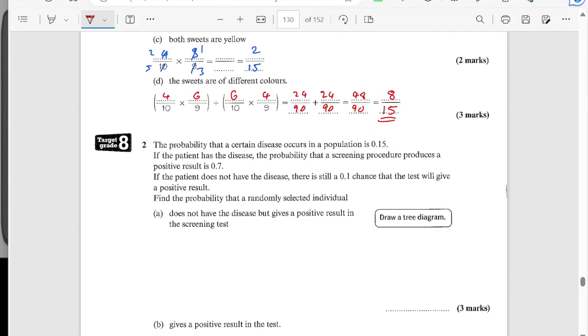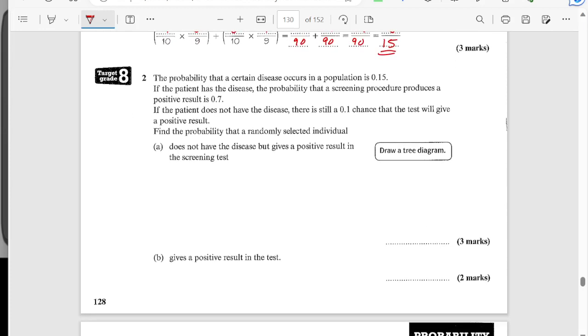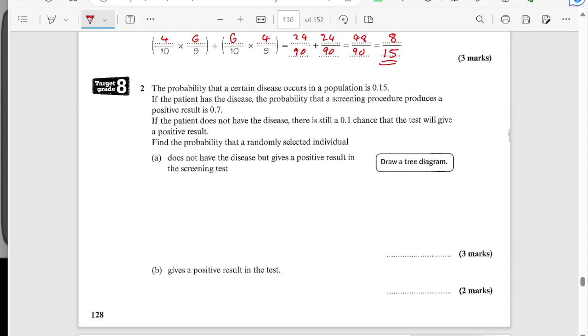Okay, question two. The probability that a certain disease occurs in a population is 0.15. If the patient has the disease, the probability that the screening procedure produces a positive result is 0.7. If the patient does not have the disease, there is still a 0.1 chance that the test will give a positive result. Find the probability that a randomly selected individual does not have the disease but gives a positive result. Okay, so a tree diagram can help for this. So I'm going to draw a variation of the tree diagram to show the four outcomes.